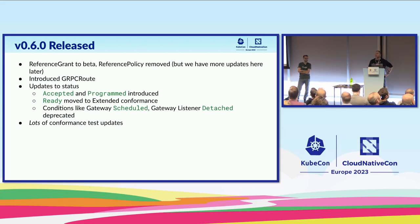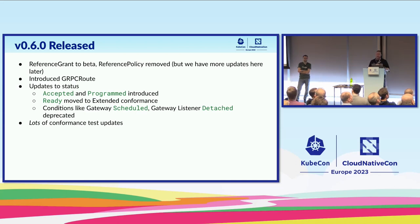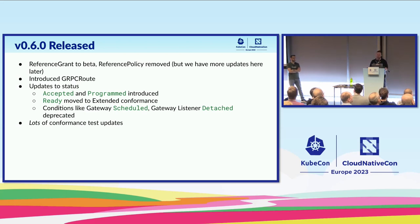Our most recent release was v0.6.0. We brought reference grant to beta and removed reference policy. Reference grant is a resource designed to allow more secure cross-namespace references. We introduced the gRPC route object and updated status — adding new conditions 'accepted' and 'programmed', moving 'ready' to extended conformance. We deprecated gateway schedule, gateway listener detach, and a couple of others, doing a big clean-up of status conditions to make them more consistent across all objects. And we did heaps of conformance test updates.